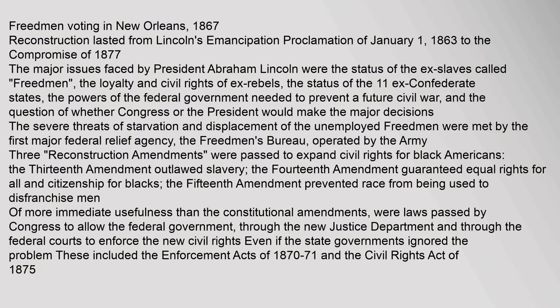Reconstruction lasted from Lincoln's Emancipation Proclamation of January 1, 1863 to the Compromise of 1877. The major issues faced by President Abraham Lincoln were the status of the ex-slaves called 'freedmen,' the loyalty and civil rights of ex-rebels, the status of the eleven ex-Confederate states, the powers of the federal government needed to prevent a future civil war, and the question of whether Congress or the President would make the major decisions.